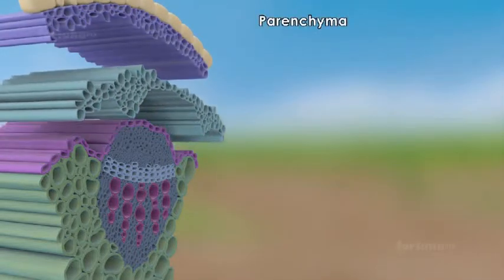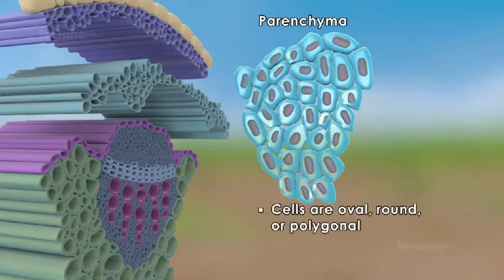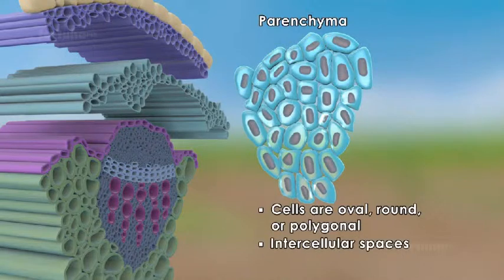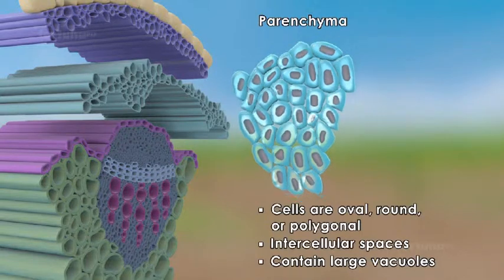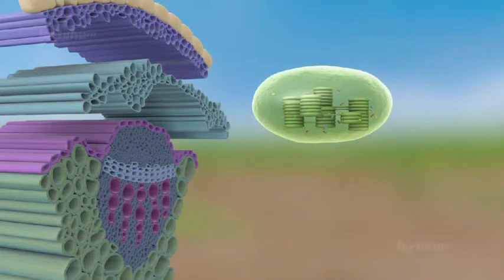Parenchyma tissue is a part of the ground tissue in stems. The cells are oval, round or polygonal and there are intercellular spaces. The cells contain large vacuoles. Parenchyma containing chloroplast is known as chlorenchyma.